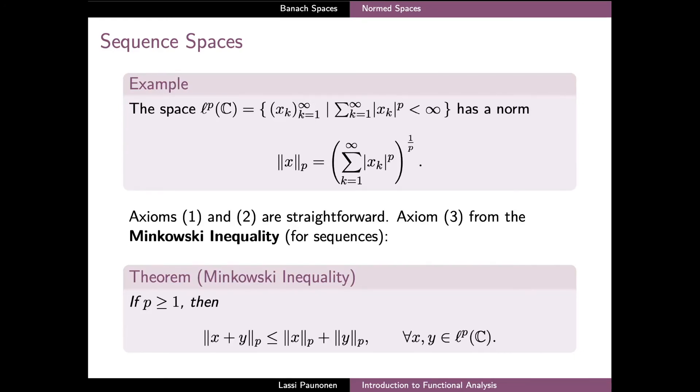On the other hand, in the space of p-summable sequences, verifying the first two axioms is quite straightforward. And on the other hand, in the case where p is strictly greater than one, the triangle inequality requires a bit more work. And this property of the p-norm follows from a separate result called the Minkowski inequality for sequences. And the complete proofs for this inequality as well as the two other axioms are given in the lecture notes. And indeed the space ℓ^p of p-summable sequences is a normed space together with the p-norm.